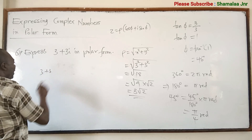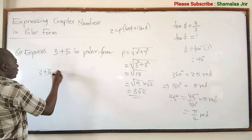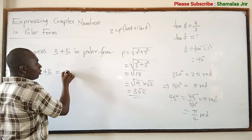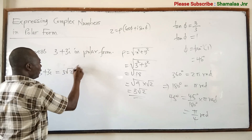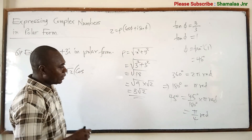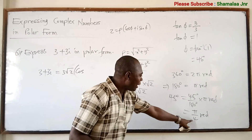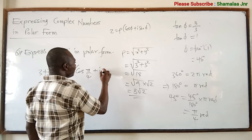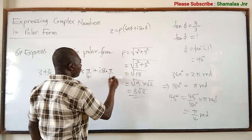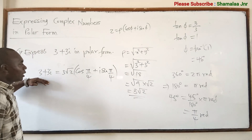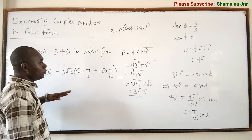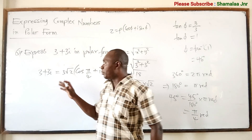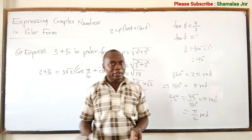Therefore, 3 plus 3i in polar form is equal to 3 root 2 times (cosine pi/4 plus i sine pi/4). This is the complex number expressed in polar form. When you are given any complex number and asked to express it in polar form, follow the same procedure — it's not difficult at all. Thank you very much.